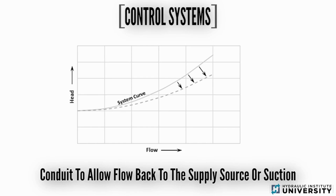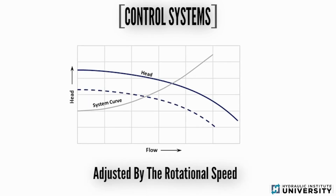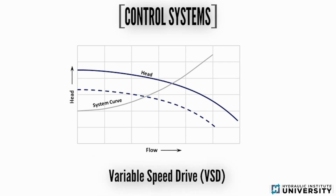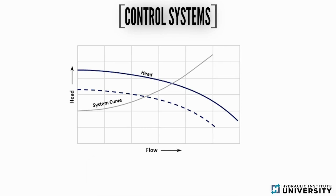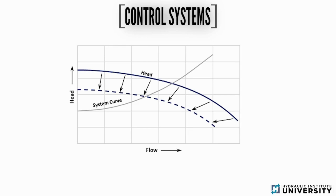On the other hand, the pump curve can be controlled by varying the pump speed. Varying the rotational speed of the pump is achieved through a variable speed drive (VSD) or variable frequency drive (VFD), which alters the pump's performance characteristics. Note that as speed is reduced, the pump performance curve shifts downward.